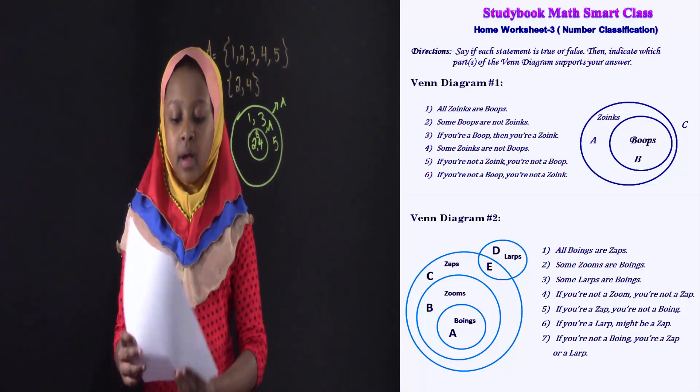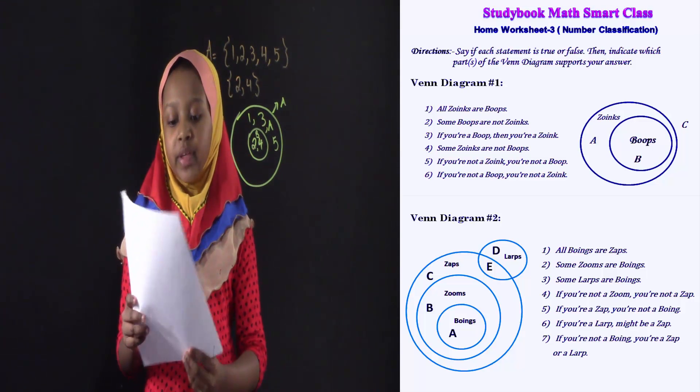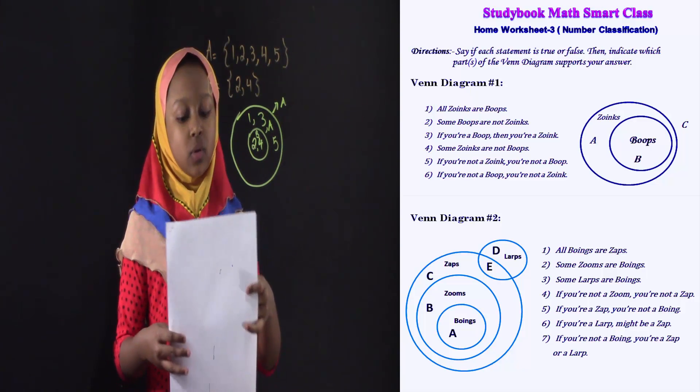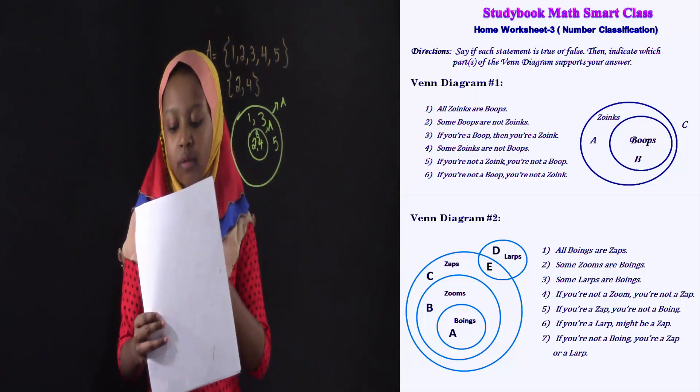So, in the Venn diagram number one, they're explaining with zoinks and boobs. I explained here with letters and numbers. Now you have to think which one is true or false.